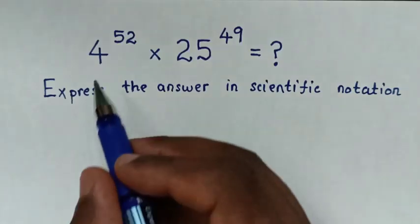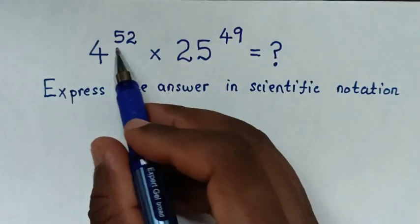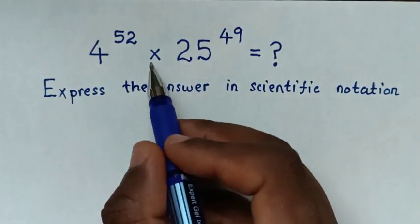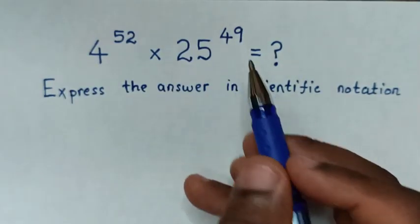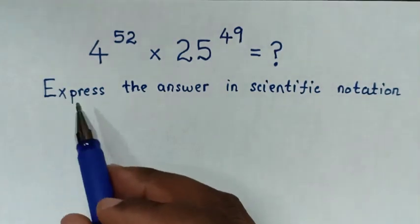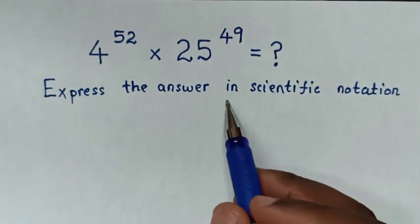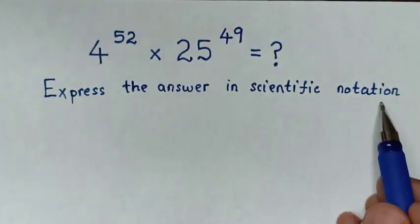Hello! How to solve 4 power 52 times 25 power 49, by expressing the answer in scientific notation.